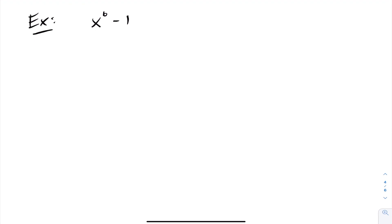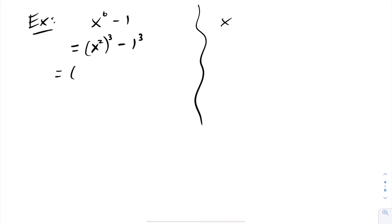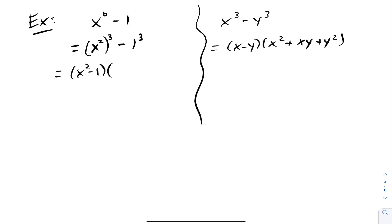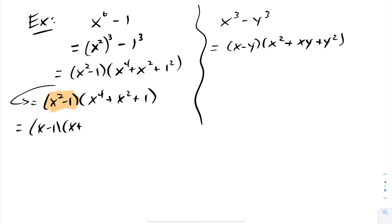For the problem x to the sixth minus 1, I see subtraction so I'm thinking difference of cubes. I rewrite it as x squared to the power of 3, minus 1 cubed. Applying the difference of cubes formula, this factors into x squared minus 1, times x to the fourth plus x squared plus 1. But x squared minus 1 is a difference of squares, so we factor further: x minus 1, times x plus 1, times x to the fourth plus x squared plus 1. Now we are fully factored.